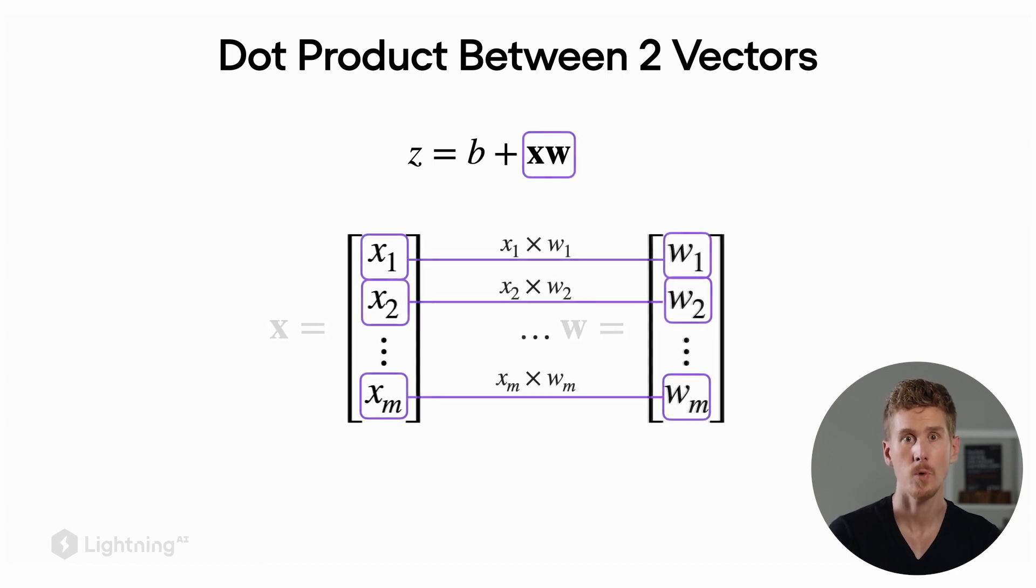How the dot product computation works is that we are looking at each row in this pair of vectors and for each row we compute the product and then we are summing up these products.